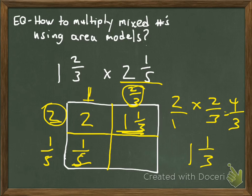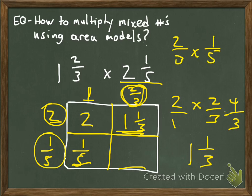To figure out the last part of the area model, I take my ⅔ and multiply it by ⅕. If I have ⅔ and ⅕, I get an answer of 2/15, which cannot be simplified. So I have 2/15 as my answer for that part.